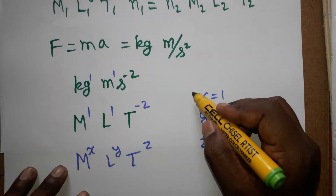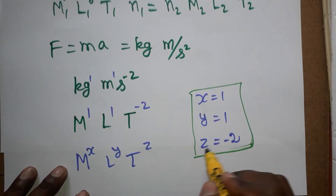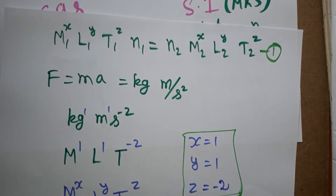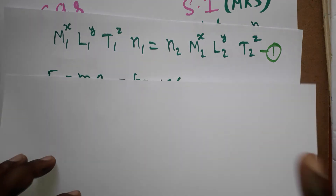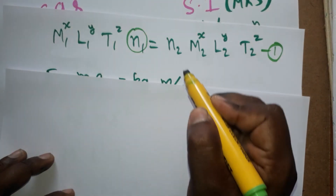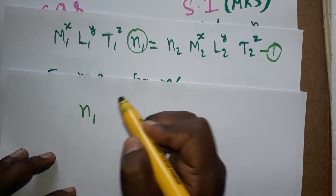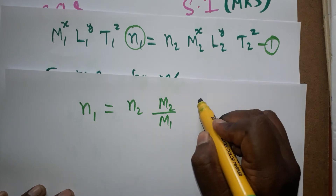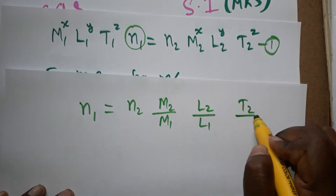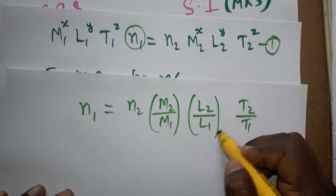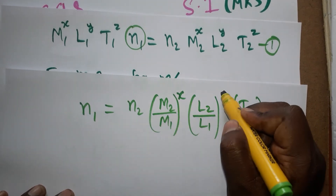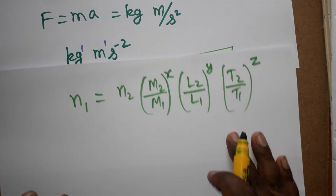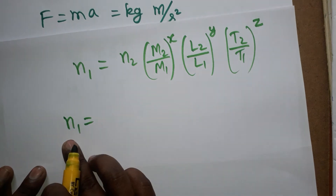We take this as equation 1 and substitute everything into it. We already know M1, L1, T1 for the CGS system. N1 (Dyne) is the unknown, N2 is Newton. So: N1 = N2 × (M2/M1)^x × (L2/L1)^y × (T2/T1)^z, with x = 1, y = 1, z = −2.